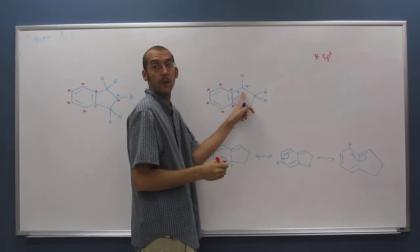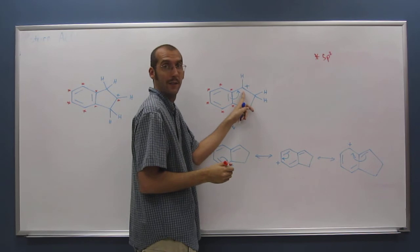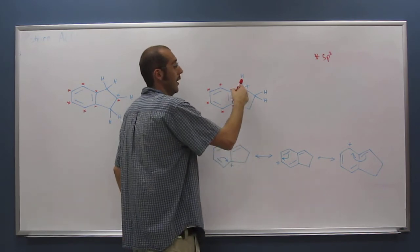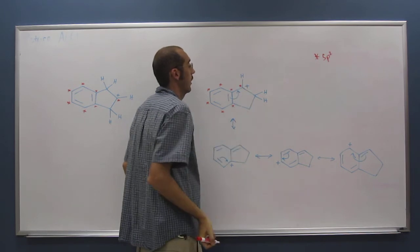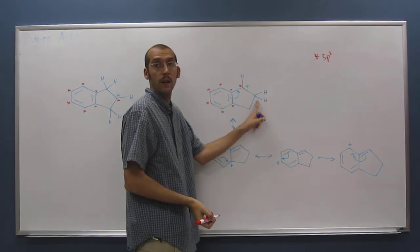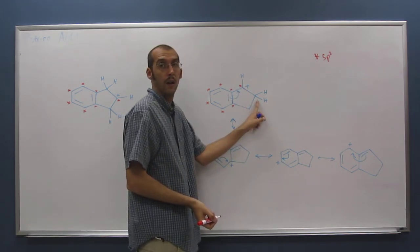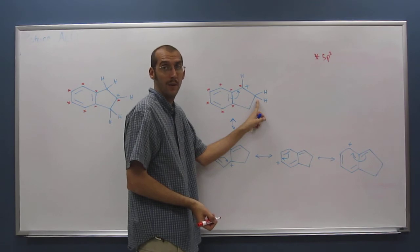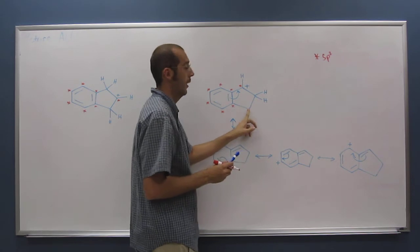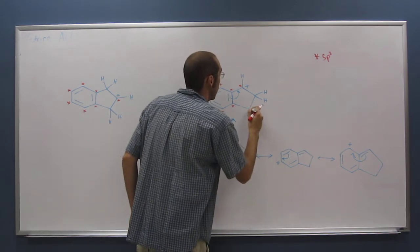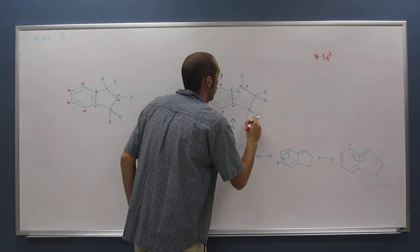And is this one an sp2 carbon? Yes, very good. Because it's only got the three bonds to it. So is this one here? No, it's sp3. If it's got the four bonds to carbon, it's sp3. What about this one? Four bonds, so it's sp3.